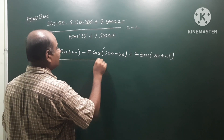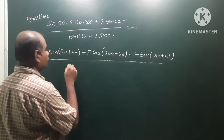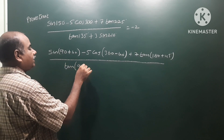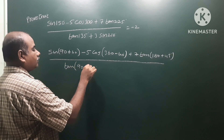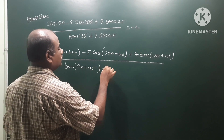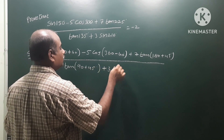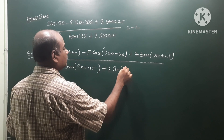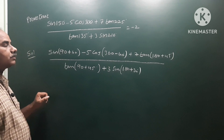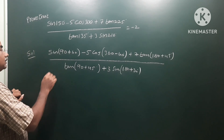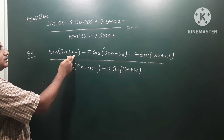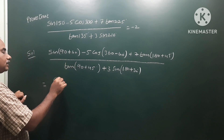In the same way, tan135° equals tan(90+45), and sin210° means 180+30.